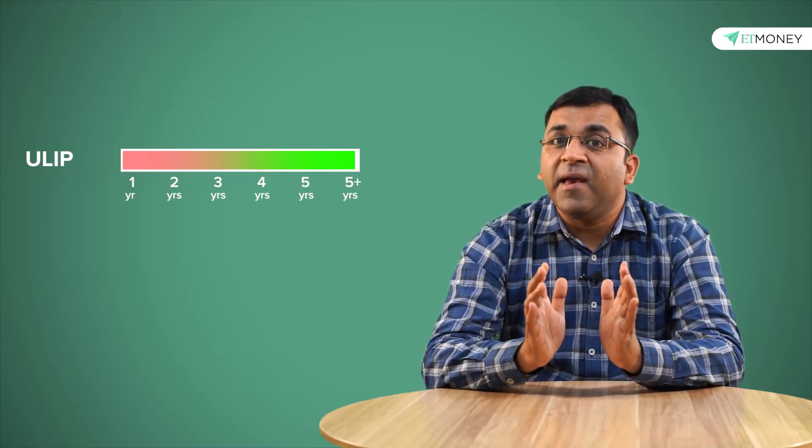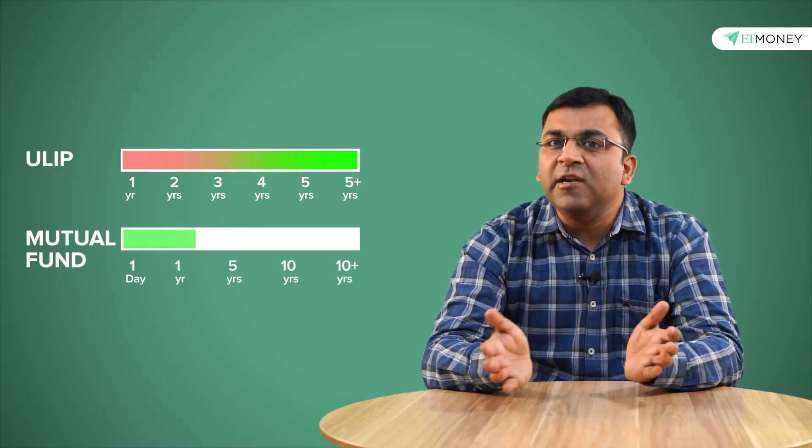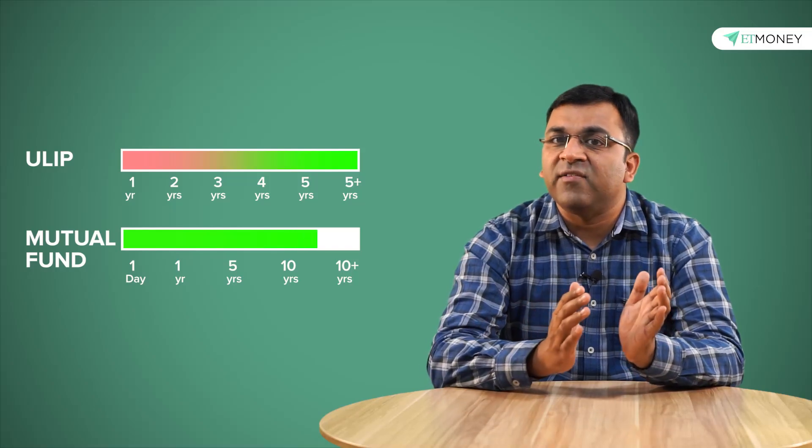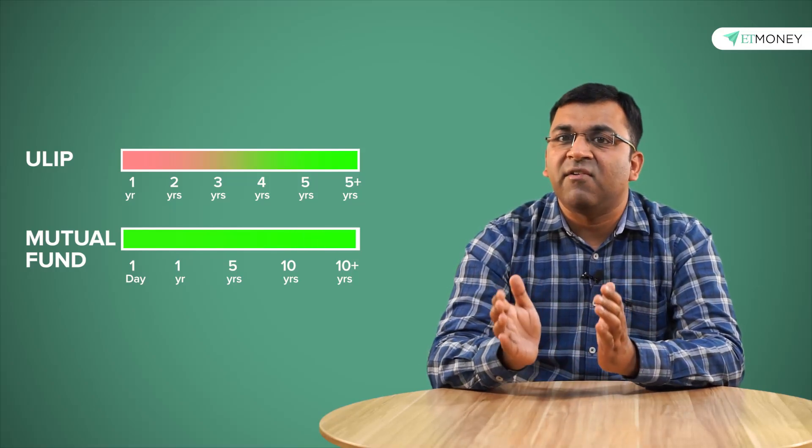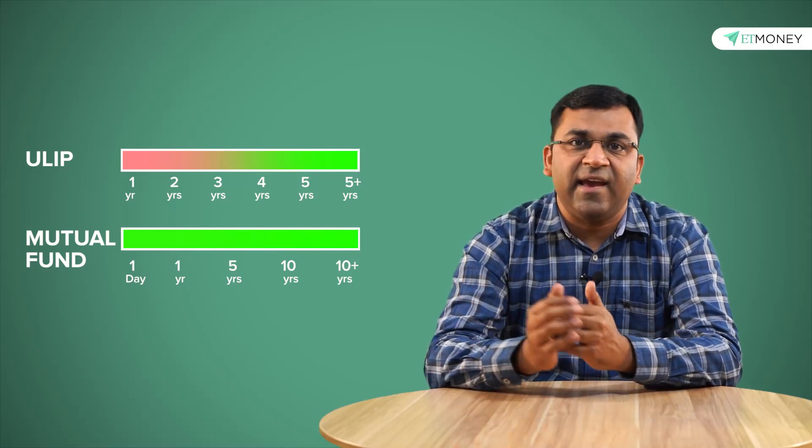A good corollary to the lock-in period discussion is when we match it with the duration of the goals. For example, if you have a short-term goal of say one year or two years then definitely a ULIP will never make sense. It is only if your goal is over five years that a ULIP can even be considered. On the contrary, a mutual fund can fit into multiple tenures running from as low as one day to goals which can run into several years and even decades.